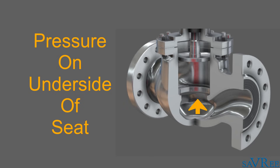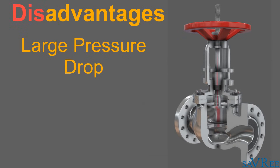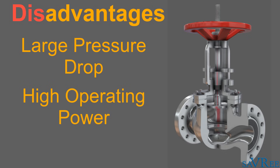The largest disadvantage with a globe valve is that there is a relatively large pressure drop across the valve. In addition, large globe valve sizes require considerable power to operate and are especially noisy in high pressure applications. Globe valves are also often heavier than other types of valves with the same flow rating.